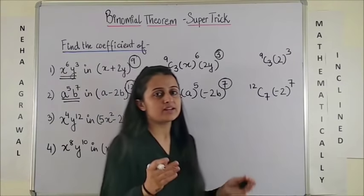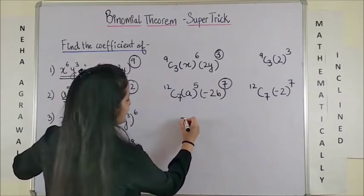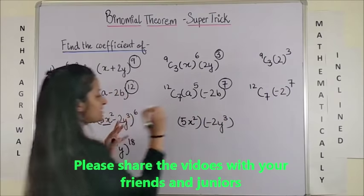Now for the next one. I am sure you would have started doing it now. So let's write these two. This is 5x squared into minus 2y cubed. Now let's focus.